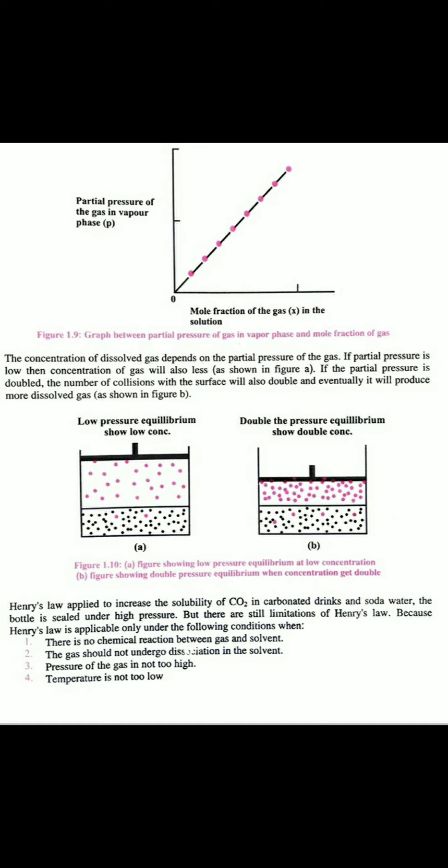For example, the schematic representation shown in Figure 1.10a: we're applying low pressure for equilibrium, the pink particles are the gas, and the black particles are the solvent or liquid. With low pressure, low concentration of gas dissolves. In Figure B, applying higher pressure or double pressure, we get higher concentration of gas into the solvent.